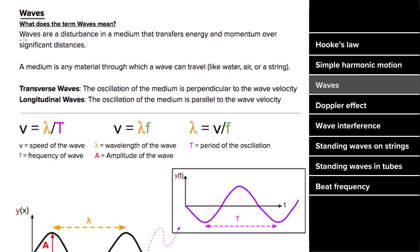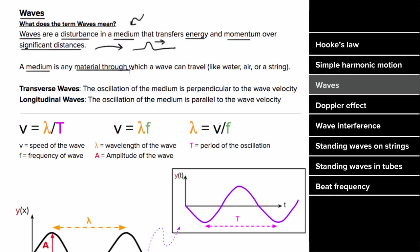Waves are disturbances that travel through a medium and transfer energy and momentum over significant distances without transmitting any mass itself over those distances. A medium is the material through which the wave can travel. You can classify a wave by the medium it's in, or by the type of disturbance created.